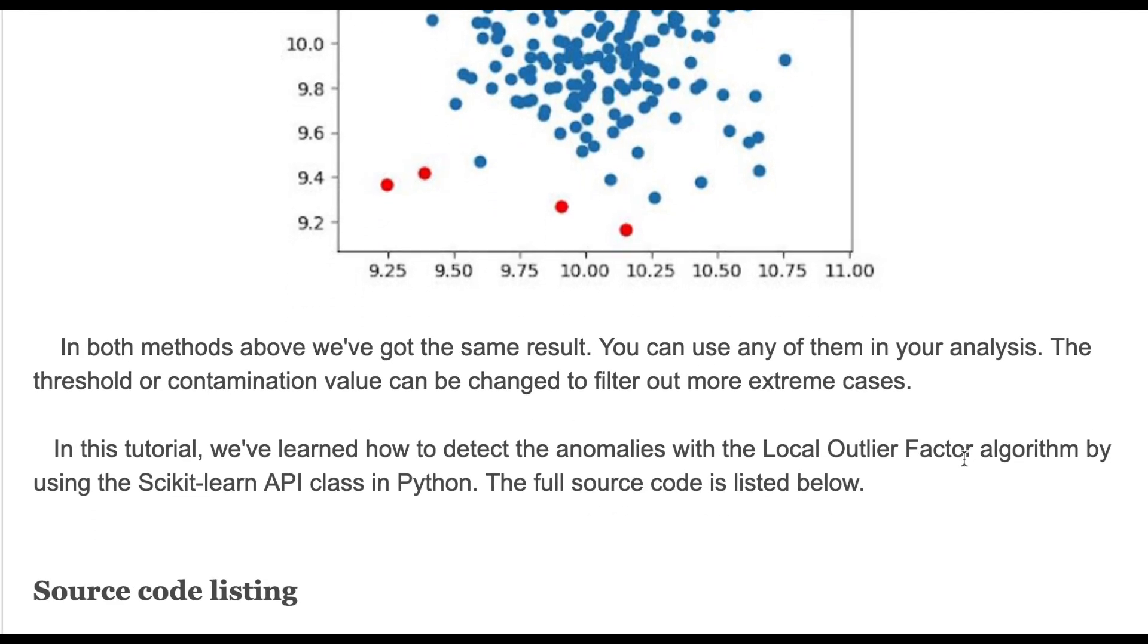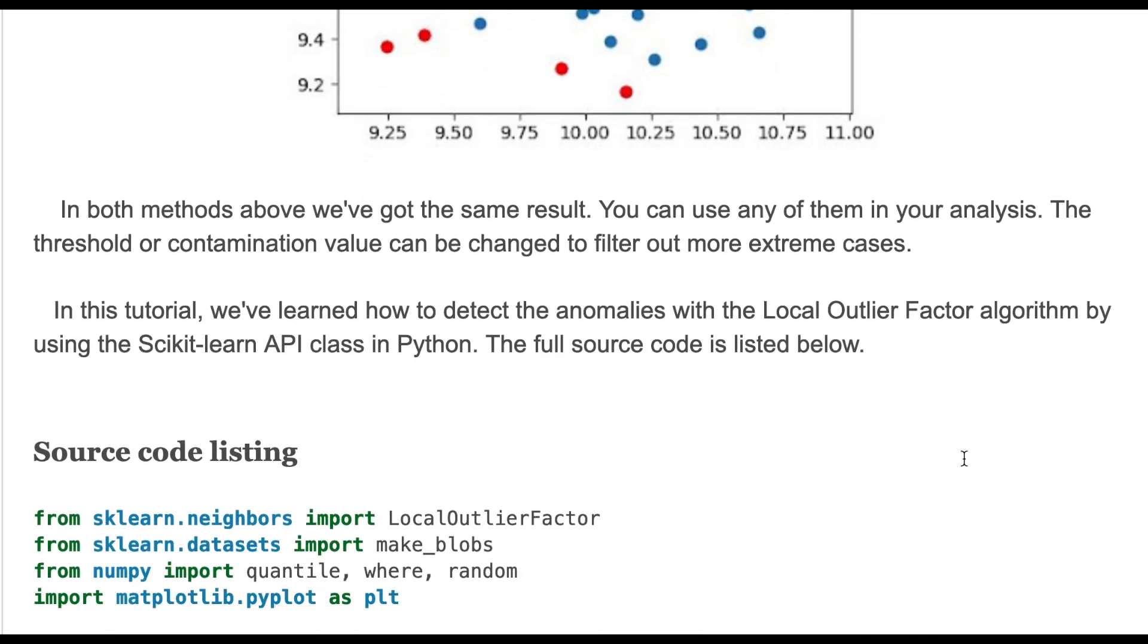In this tutorial we have briefly learned how to detect anomalies by using the Local Outlier Factor by using the scikit-learn API class in Python. And here is the source code.